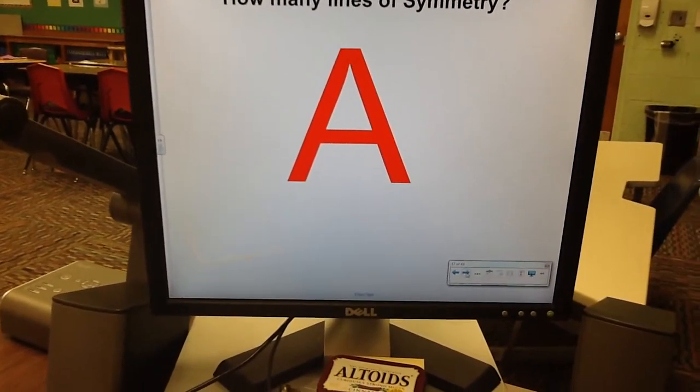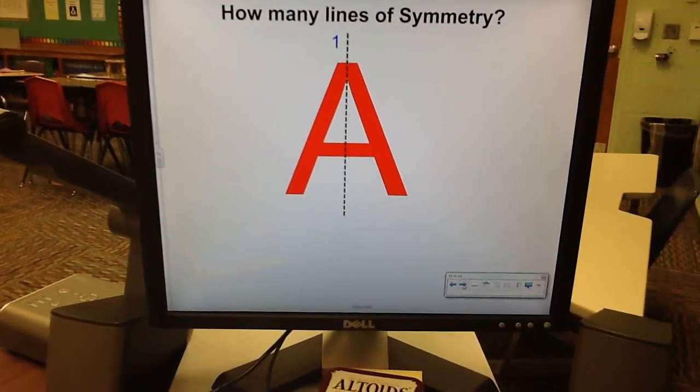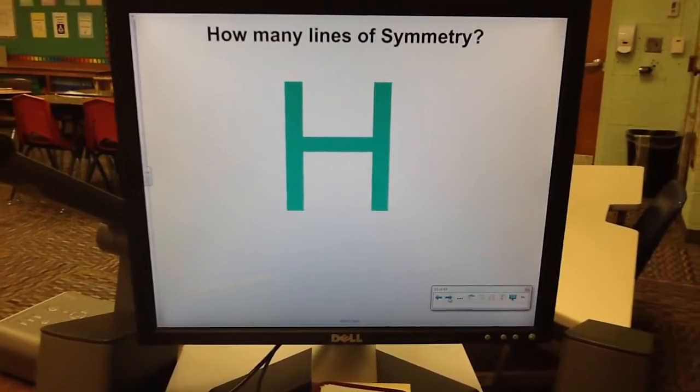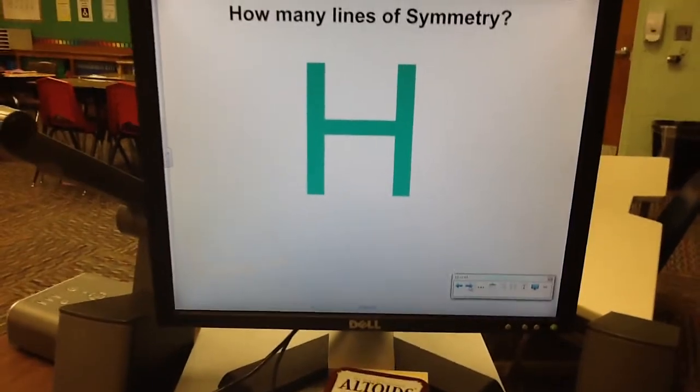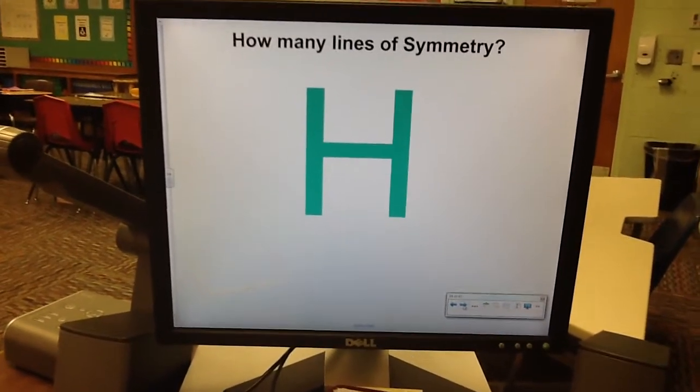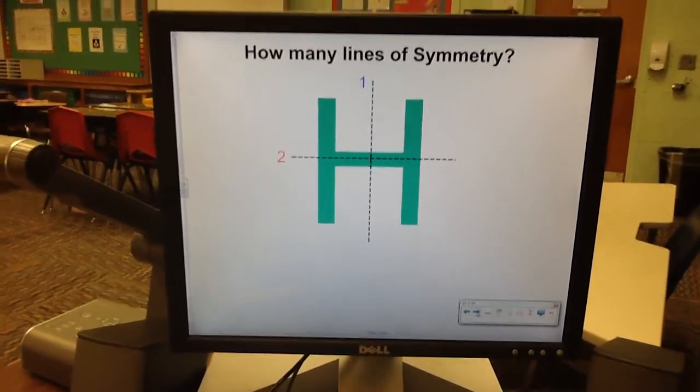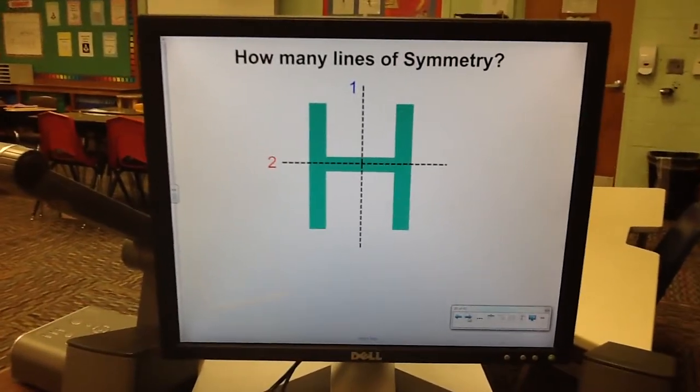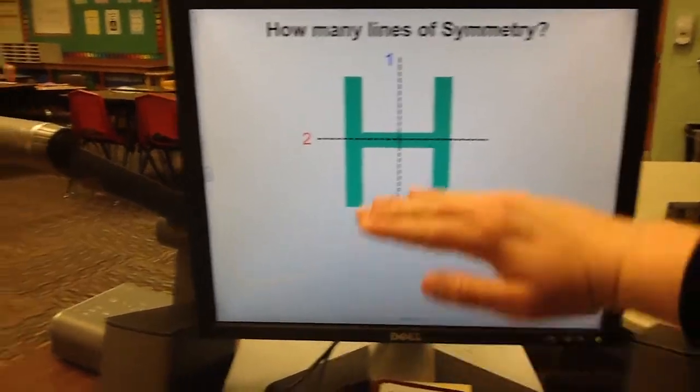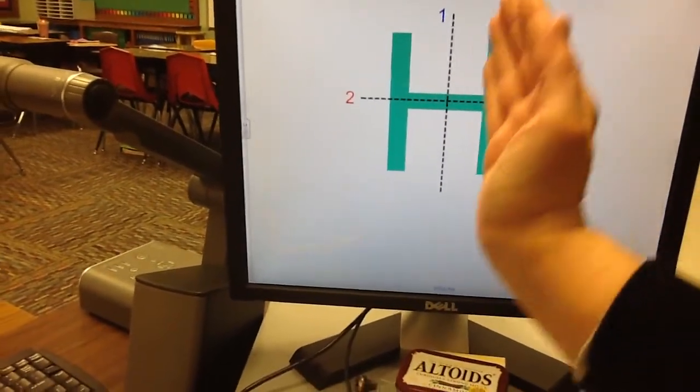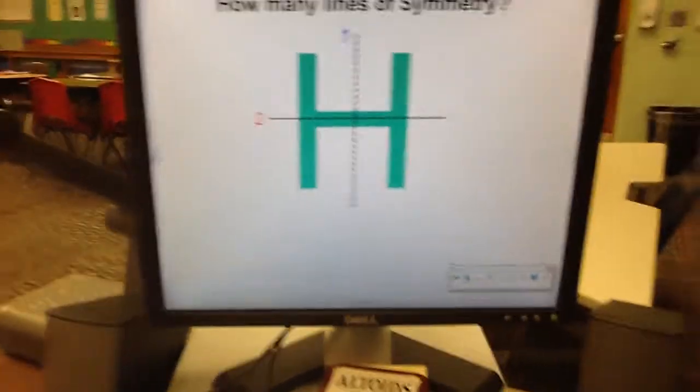How many lines of symmetry in the letter A? One, right down the middle. How many lines of symmetry in this H? Why don't you pause the video, take a guess, and then we'll look. Okay, you've unpaused the video. Check it out. Two lines of symmetry. You can fold it this way, and you can fold it sideways. Very good.